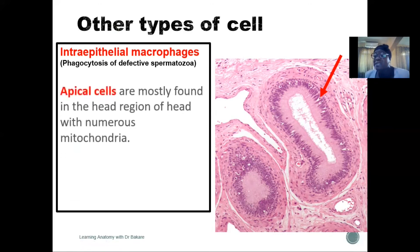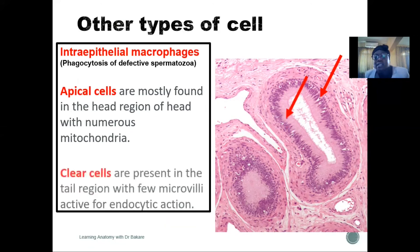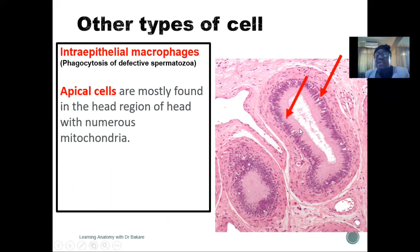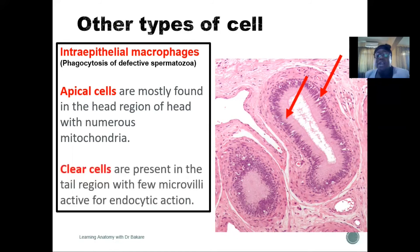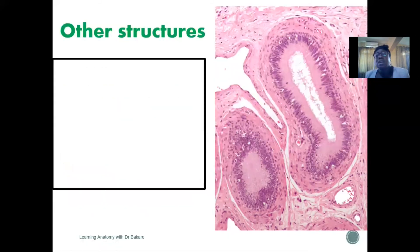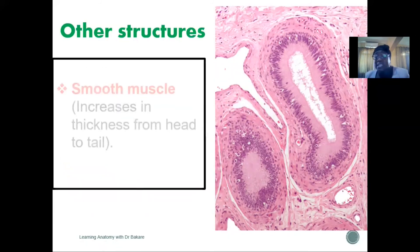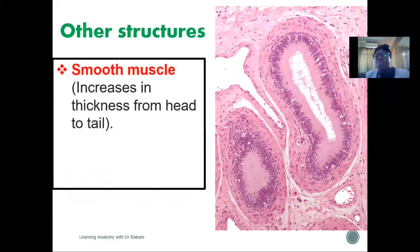Another type of cell are the apical cells, which are restricted to the head region of the epididymis. These apical cells are rich in mitochondria. We also have the clear cells, which are limited to the tail region of the epididymis.